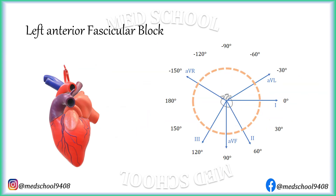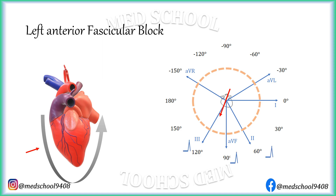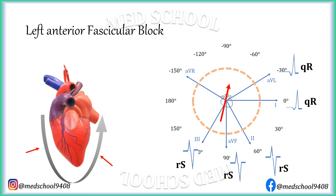When the anterior fascicle is blocked, the left ventricle is activated as follows. For the part of conduction through the posterior fascicle, the vector is directed downward and right. For this vector, leads 2, 3, and AVF show a small R wave, whereas leads AVL and 1 show a small Q wave. The vector for conduction through the anterior fascicle is directed upward and left. Hence, leads 2, 3, and AVF show a small Q wave, whereas leads AVL and 1 show a small R wave. So, leads 2, 3, and AVF have an RS pattern, and leads AVL and 1 have a QR pattern.